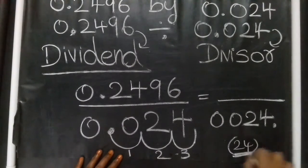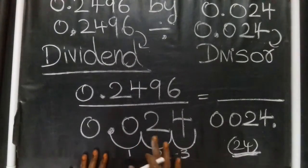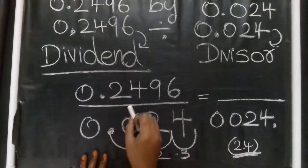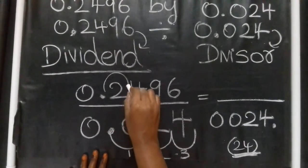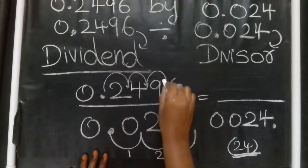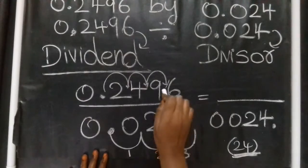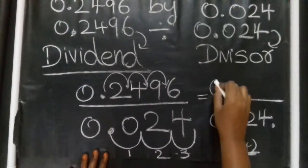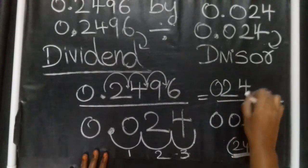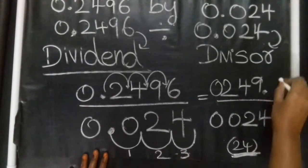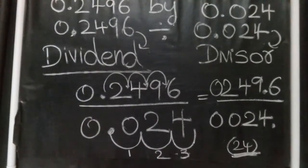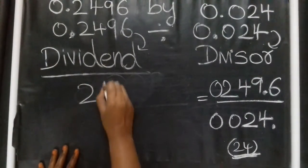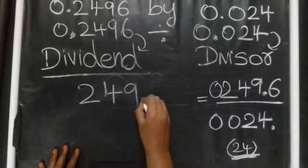Now we will move the decimal point in the dividend by the same number of steps. The same three steps — we will move the dividend's decimal point. So the decimal point moves: one, then two, then three. These three steps are done. So the decimal point is now here — 0, 2, 4, 9, then 6. This is the new dividend: it is 249.6.